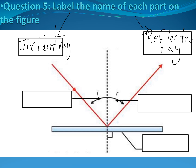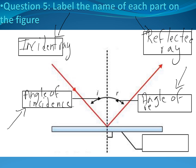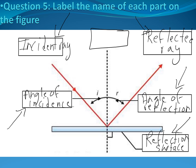This angle is called the angle of incidence. And this angle, Habib, is called the angle of reflection. The last one — Philippe: this is called the mirror or reflection surface. We also have the normal — Reyna identifies it as the normal. Excellent.